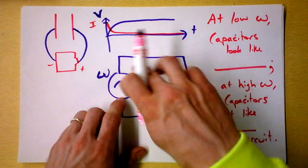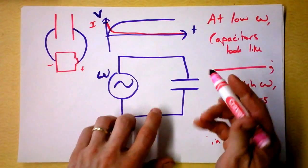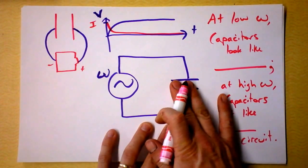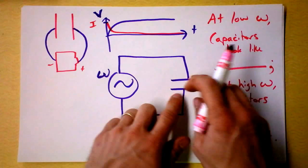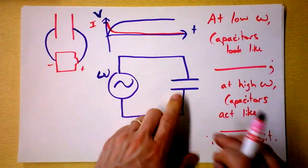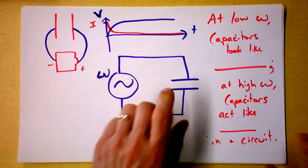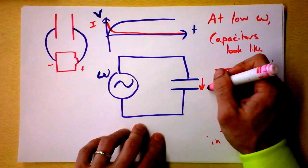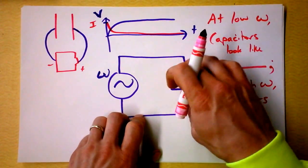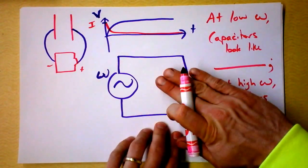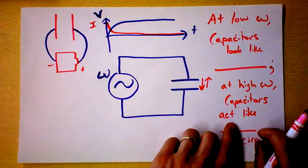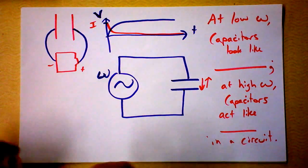At high omegas, sloshing back and forth, the capacitor doesn't affect the sloshing at all — assuming the capacitor is large enough that it doesn't reach its maximum voltage very quickly. Tiny capacitors reach maximum voltage very quickly and could still impede the flow of charge. Outside the capacitor, it looks as if there's just a wire there. So at high omega we put 'wire' (short), and at low omega we put 'break.' A break and a short are very different things.